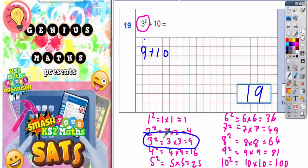So to cut a long story short, 3 squared is 9, and 9 add 10 is 19.